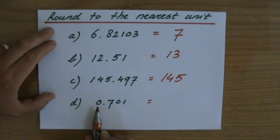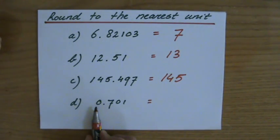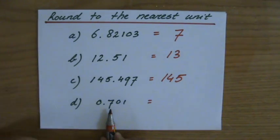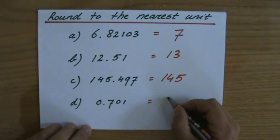Finally, to the nearest unit, what is my unit? It's a zero. Now it either stays zero or it goes up to a one and that depends on the next number which is five or higher because it's a seven, so the zero becomes a one.